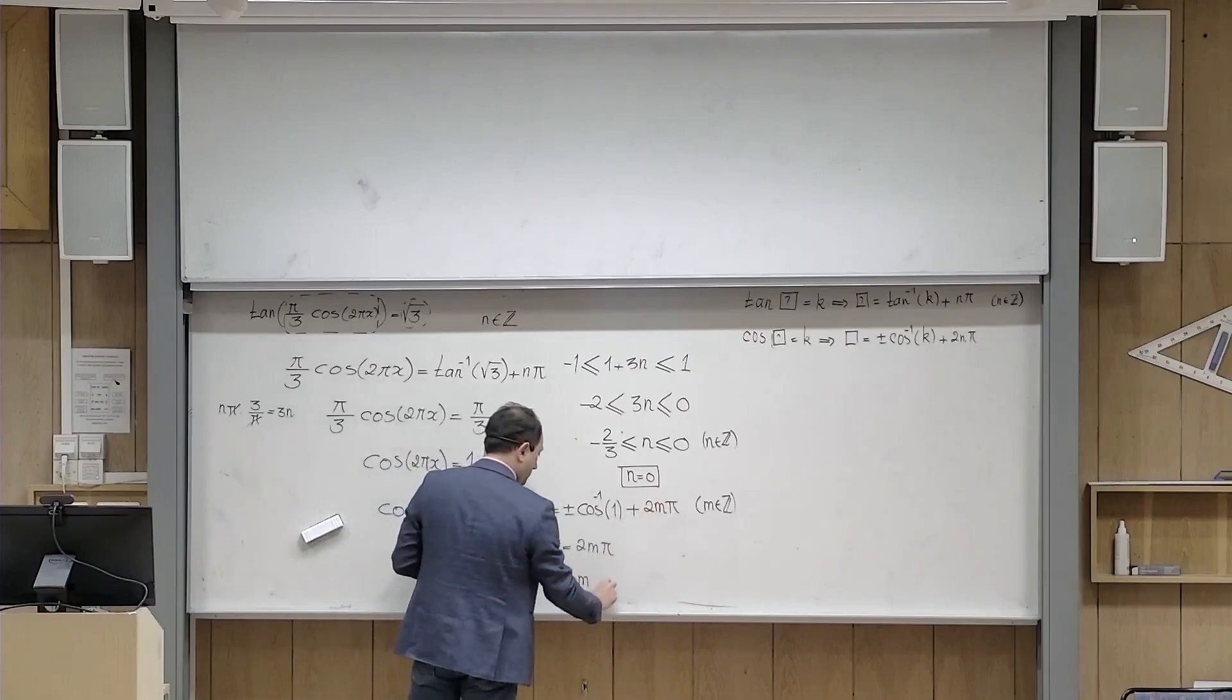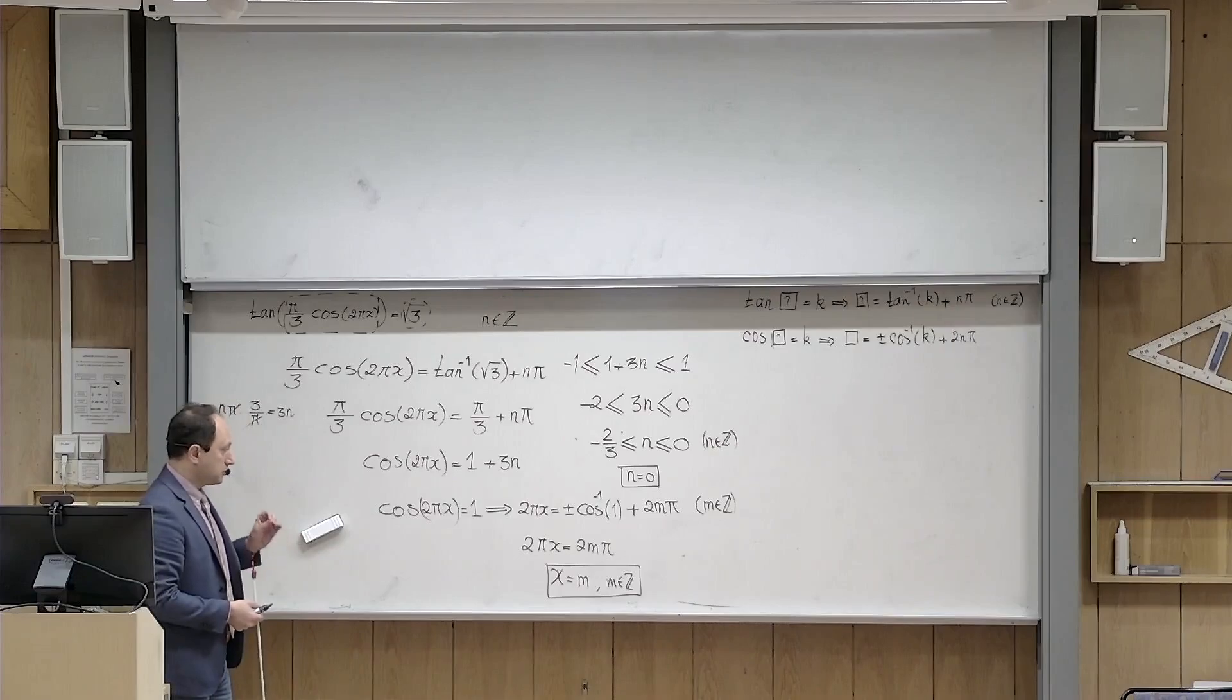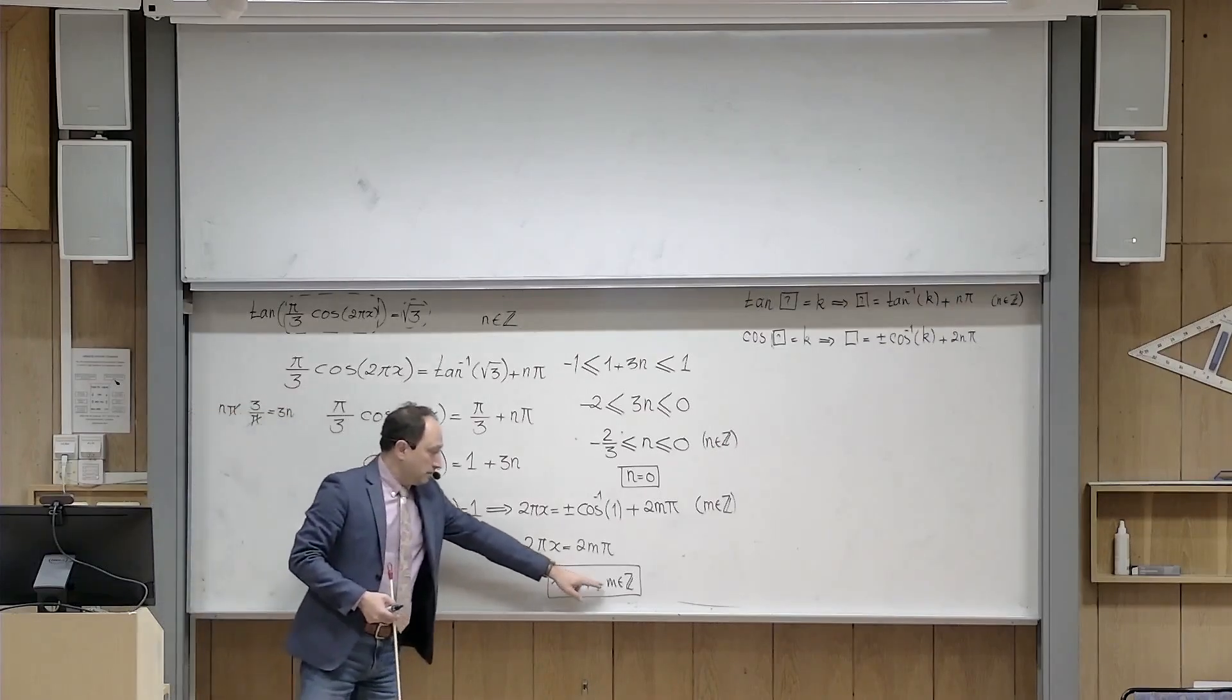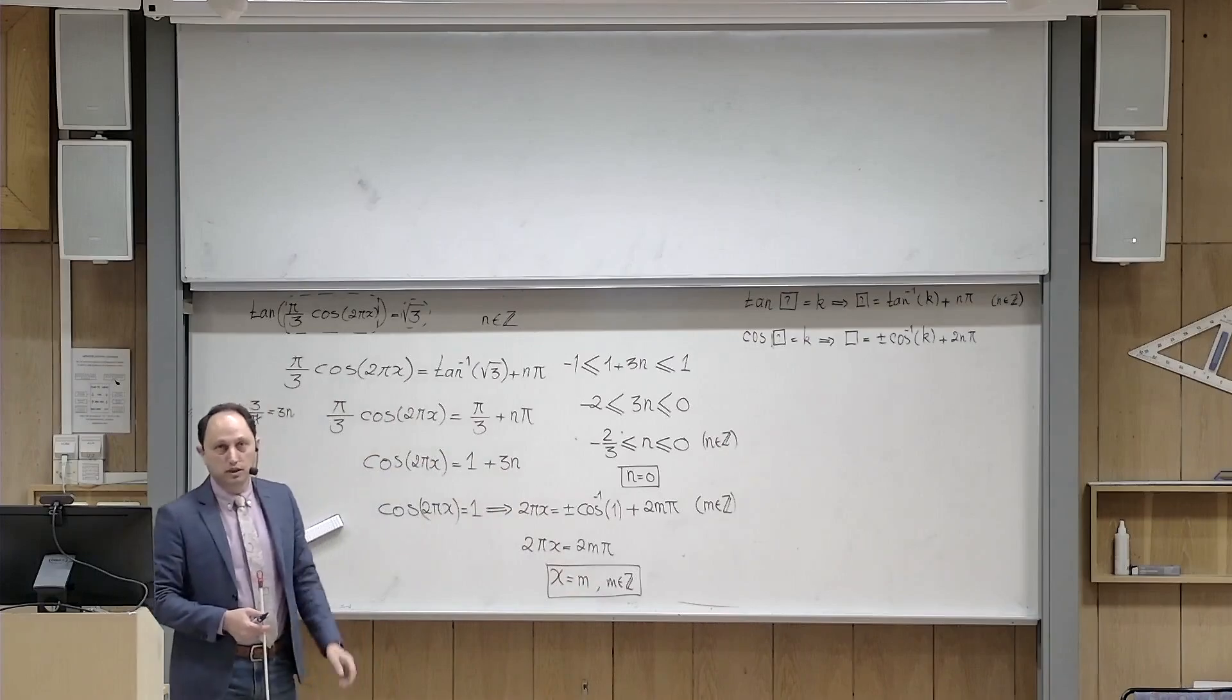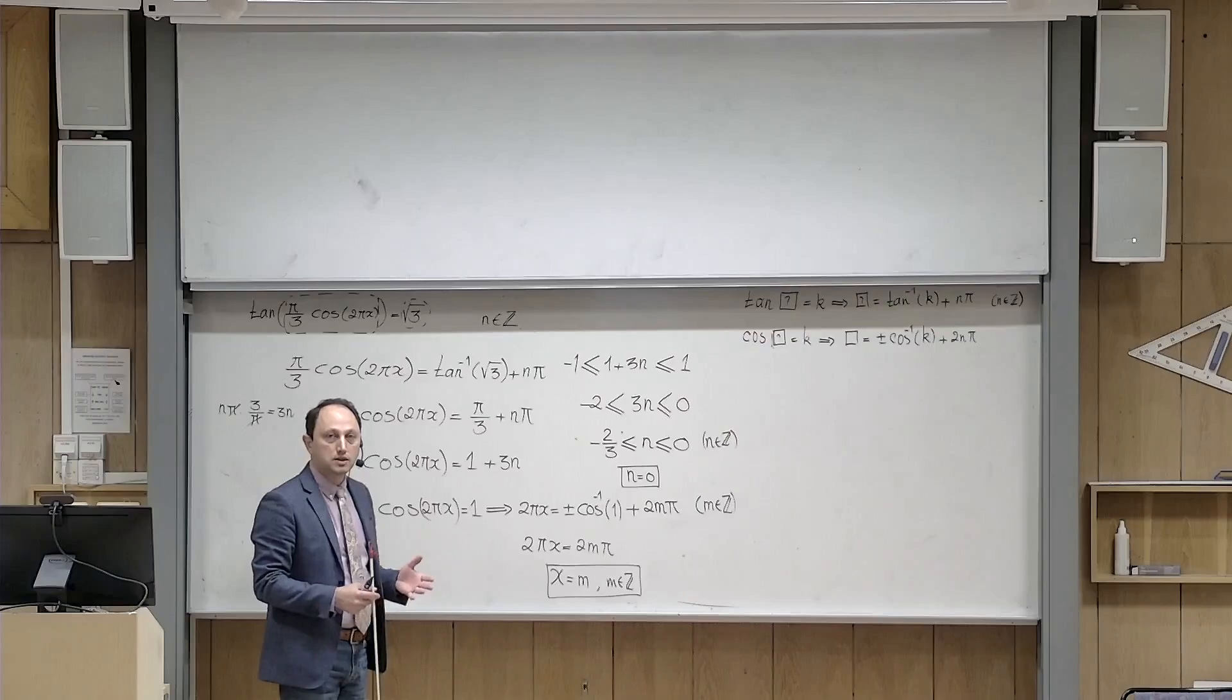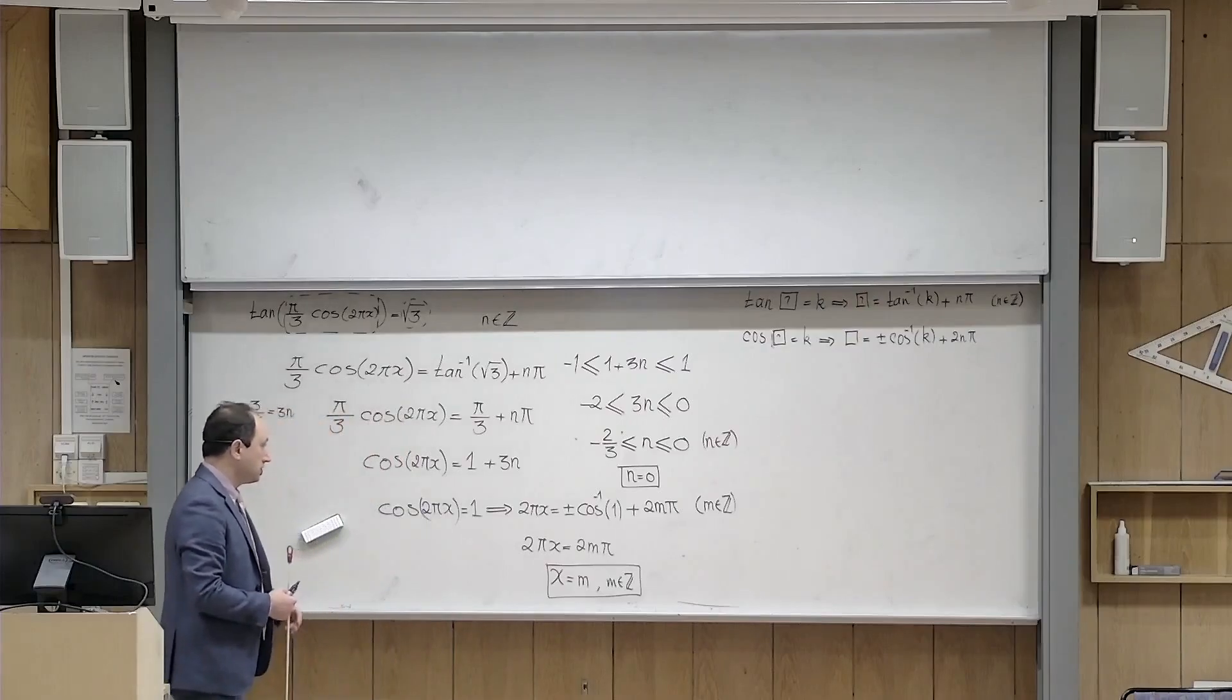But what is m? m is an integer. So we succeeded to solve the problem and find x. What did we get? Every integer m, no matter what that is, is a solution to this trigonometric equation. So then it means that the set of all possible solutions is nothing except the set of all integers. That is the solution of this problem.